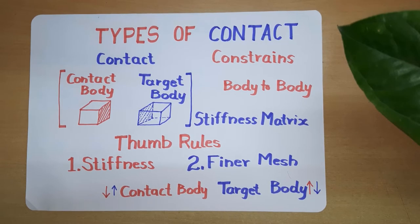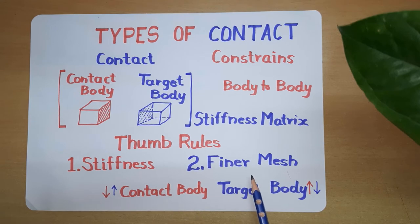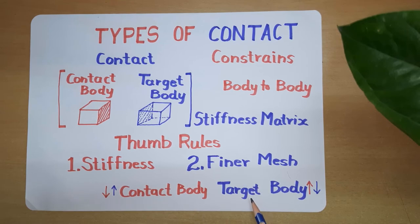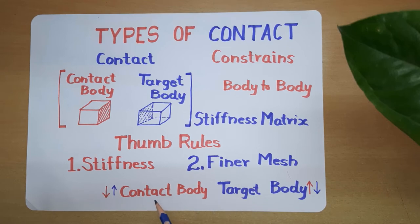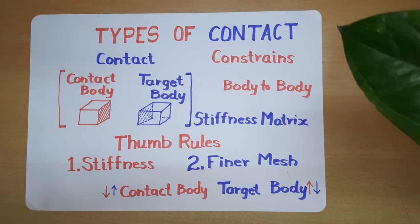So as per the first thumb rule, higher stiffness will be a target body and lower stiffness will be a contact body. In the case of the second thumb rule, higher mesh density means it will be a contact body and lower mesh density means it will be a target body. When we have a finer mesh for the contact body, that body will not try to penetrate into the target body.